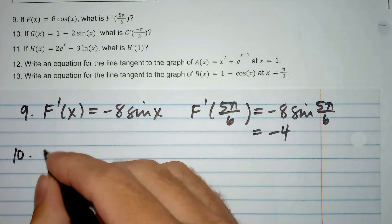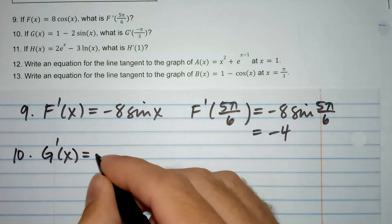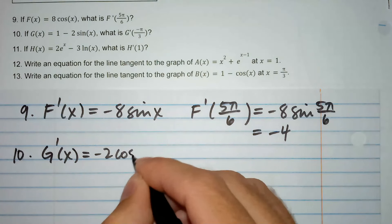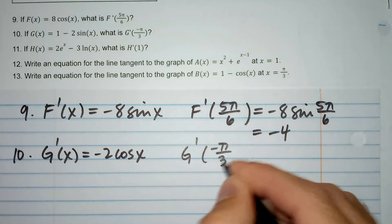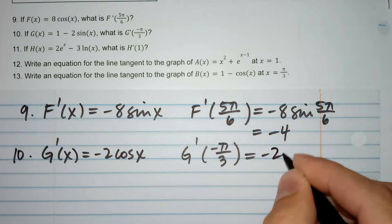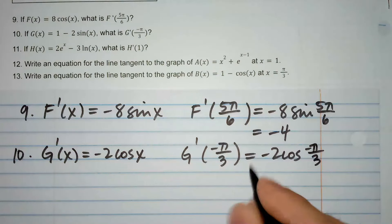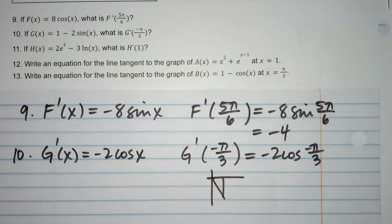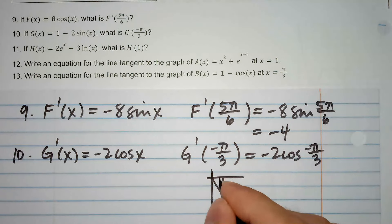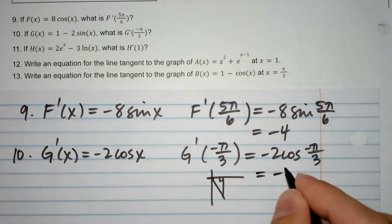g'(x) equals 0 minus 2 times the derivative of sine, which is cosine. So g'(negative π/3) equals negative 2 cosine of negative π/3. Negative π/3 is down on the unit circle — cosine there is going to be positive half. So positive half multiplied by negative 2 is going to be negative 1.